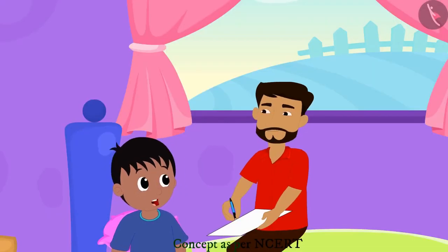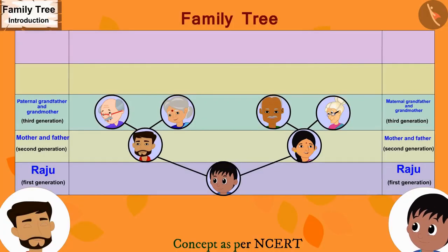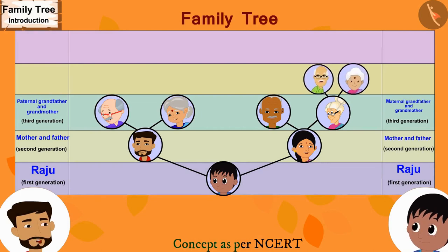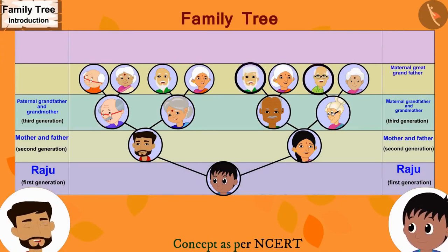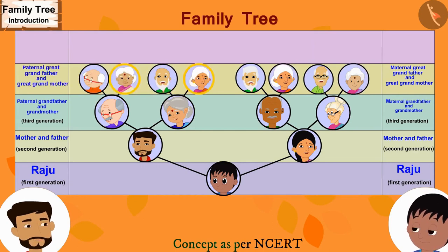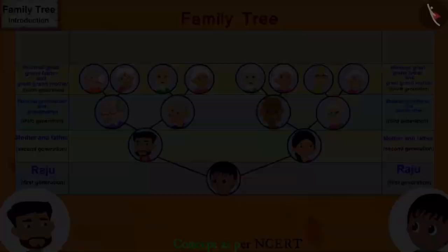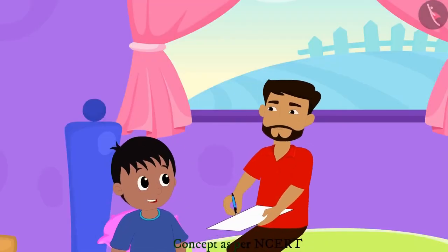Now, our family tree is complete, isn't it, father? No, Raju. We have yet to add more people to it. For your maternal grandmother's parents, we will draw two lines and write their names. Then we will draw two lines for your maternal grandfather's parents. The names of your paternal grandfather and grandmother's parents will also be added in the same way. What is my relationship with all these people, father? These are your maternal great-grandfather and great-grandmother. And these are your paternal great-grandfather and great-grandmother. This is our fourth generation. Now we have added all the people to this family tree, right, father?